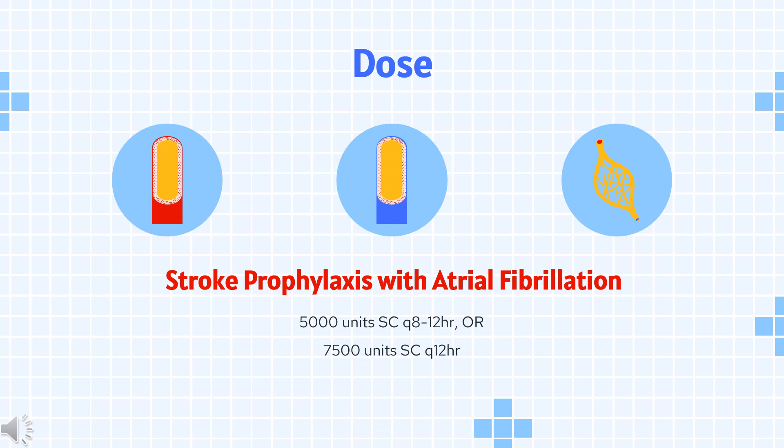Dose — DVT and PE. Prophylaxis: 5,000 units SC every 8–12 hours, or 7,500 units SC every 12 hours. Treatment: 80 units/kg IV bolus, then continuous infusion of 18 units/kg/hr; or 5,000 units IV bolus, then continuous infusion of 1,300 units/hr; or 250 units/kg every 12 hours.